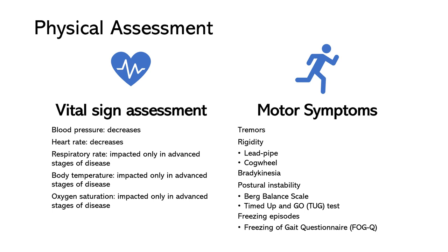Postural instability is another commonly exhibited motor symptom. This is a reduced ability to maintain a steady and balanced posture, resulting in impaired balance and increased risk of falls. Patients may have difficulty maintaining an upright posture, may exhibit stooped posture or a forward-leaning position, and may have difficulty adjusting their posture to changes in the environment, such as uneven surfaces or changes in body position. This can lead to a higher risk of falls, especially during activities that require complex movements such as turning or changing direction while walking. Assessment tools such as the Berg Balance Scale or the Timed Up and Go (TUG) test can be utilized to quantify postural instability and monitor changes over time.